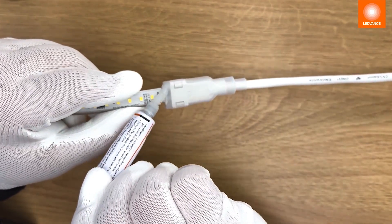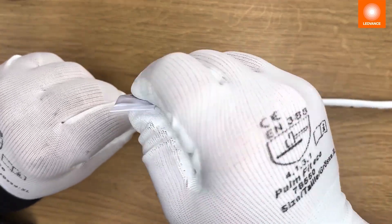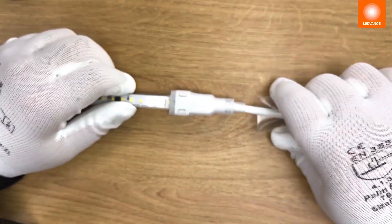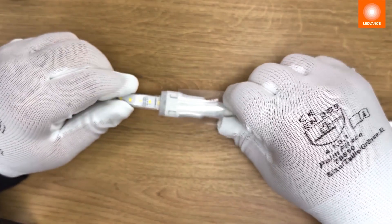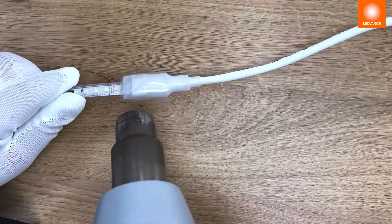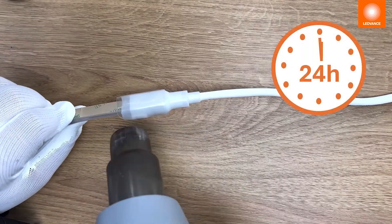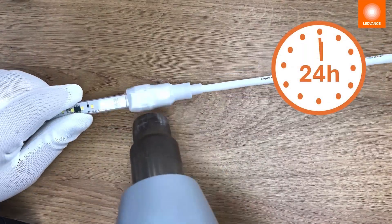Now put silicone glue here to seal the gap between the strip and protective silicone sleeve. Finally, attach the shrinking foil and let it dry for 24 hours.